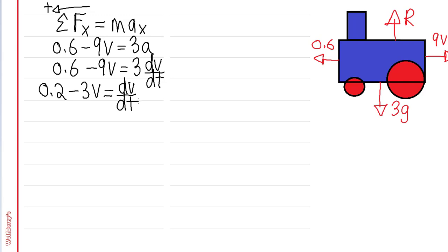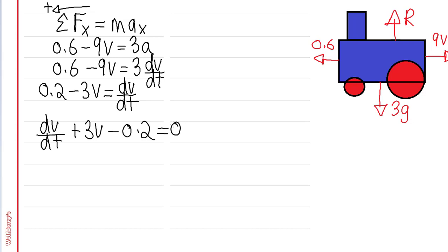All we have to do now is rearrange everything, as the question asks. Another way of writing dV/dt is v-dot, where the dot means derivative with respect to time. So our final equation will be dV/dt plus 3V equals 0.2, which is exactly how the question asks you to describe the motion.